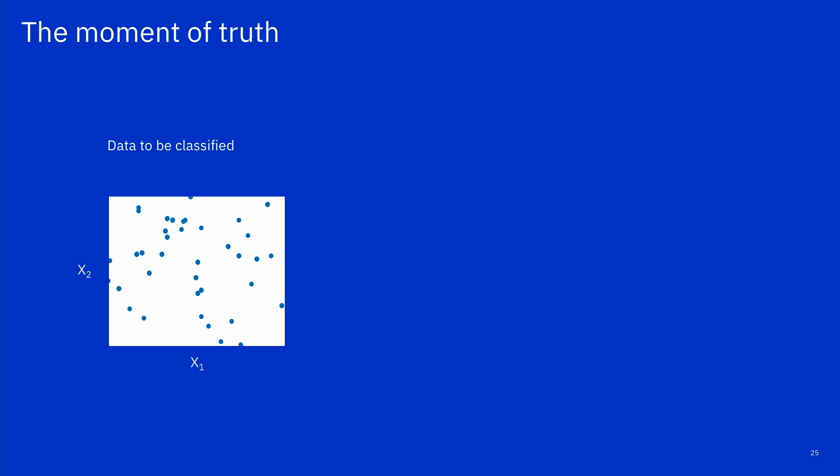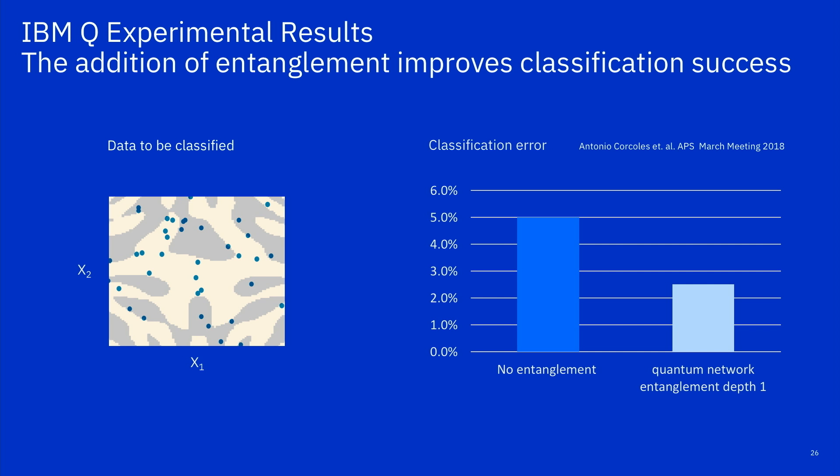And now here's the moment of truth. So this is the data to be classified. It's never seen it before. And here's the result. The result is that using entanglement, the more entanglement I have, here's an example of entanglement depth one, it improves my classification accuracy to what we could do when I use a quantum computer without entanglement. So I've shown that a property that is exponentially costly to model on a classical computer is beneficial in the task of classification. So that's an important first step in the direction.